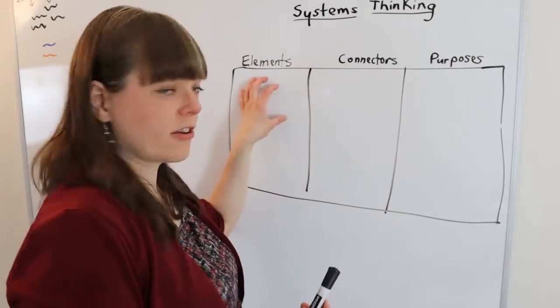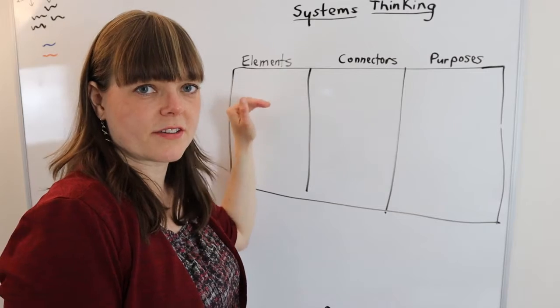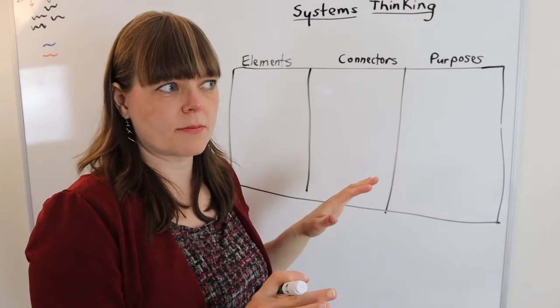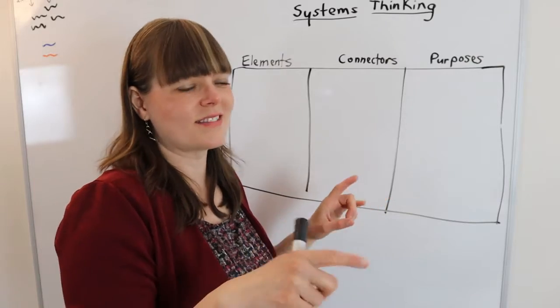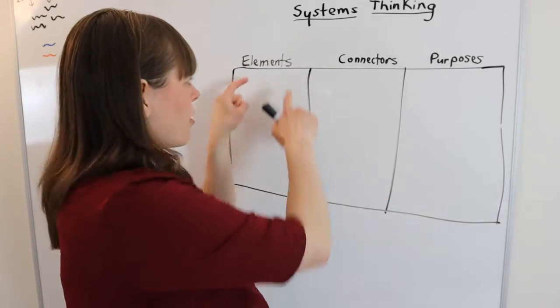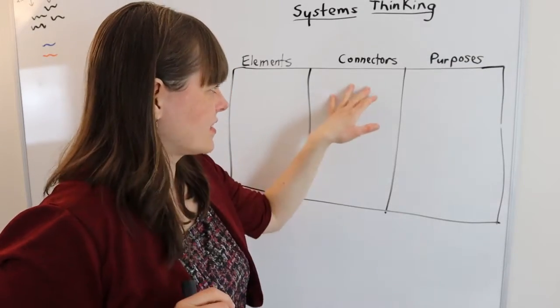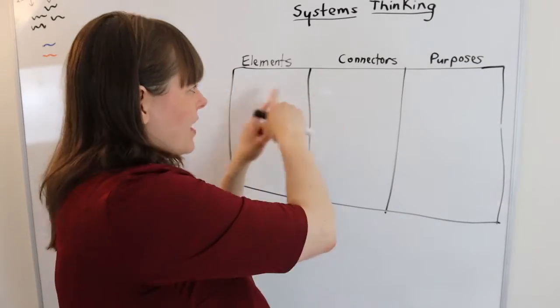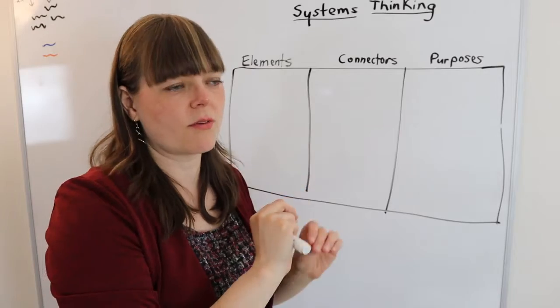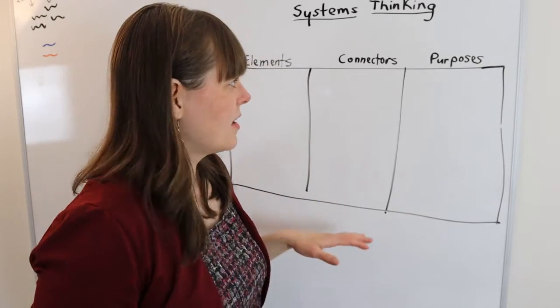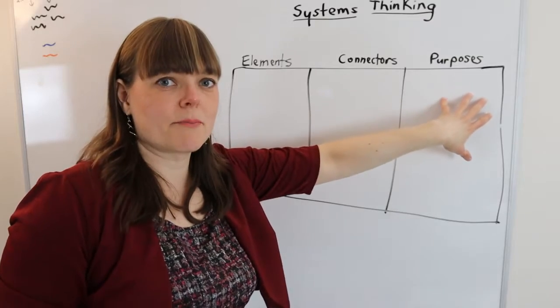Systems have parts which are the elements, the different pieces that if you took a snapshot of the system and tried to diagram it, what are the things in that system at that moment. Systems have connectors, which connect between the parts and create relationships that can be dynamic. And then of course, systems have a purpose.